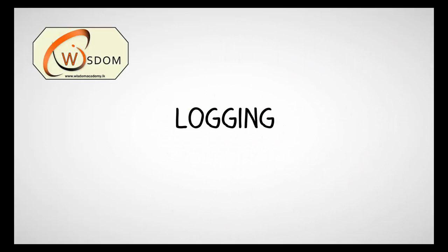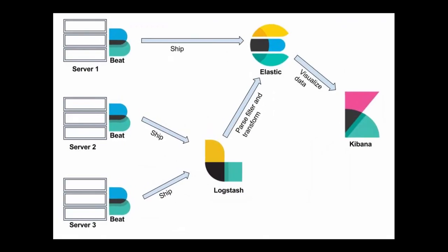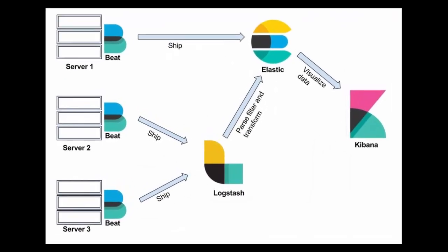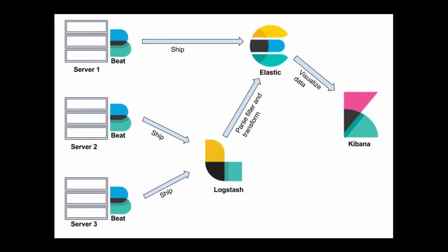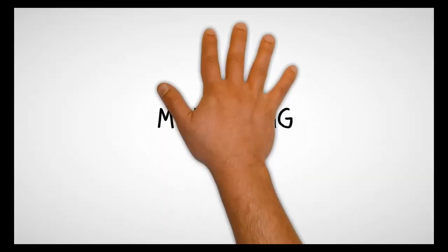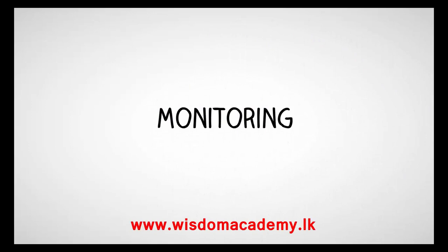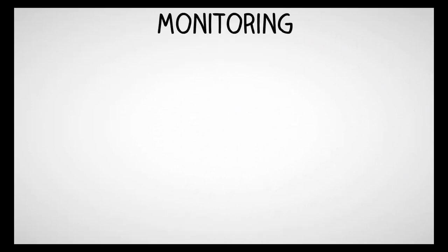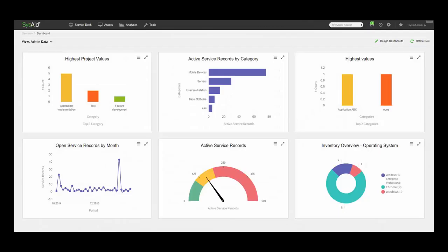Logging: with distributed systems, you need centralized logs to bring everything together — otherwise the scale is impossible to manage. Monitoring: it's critical to have a centralized view of the system to pinpoint sources of problems.